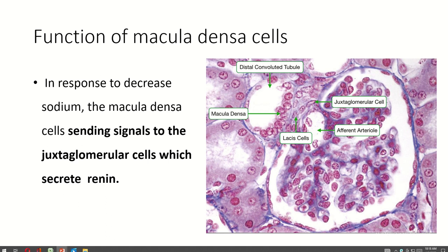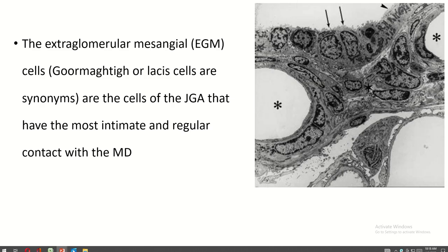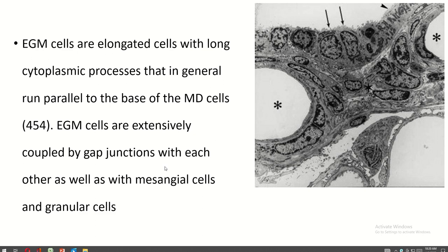The function of the macula densa cell: in response to decreased sodium, macula densa cells send a signal to the juxtaglomerular cells to secrete renin. Extraglomerular mesangial cells, also called lacis cells, are elongated cells with long cytoplasmic processes that generally run parallel to the base of the macula densa cells. The lacis cells are electrically coupled by gap junctions with each other as well as with mesangial cells and granular cells.